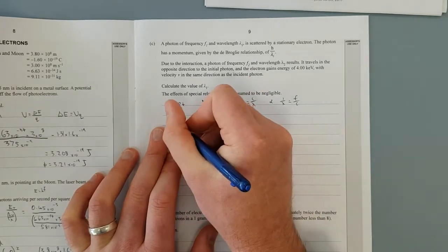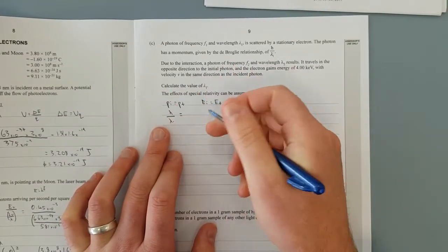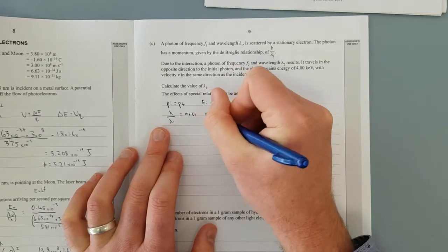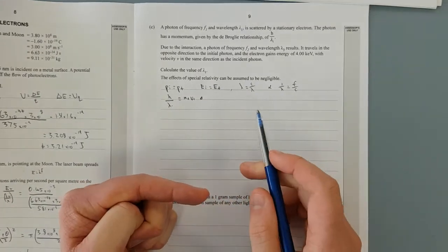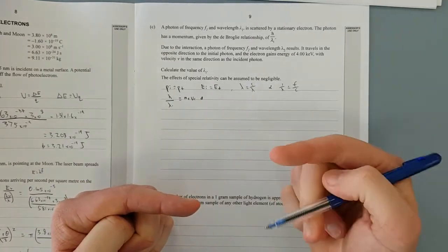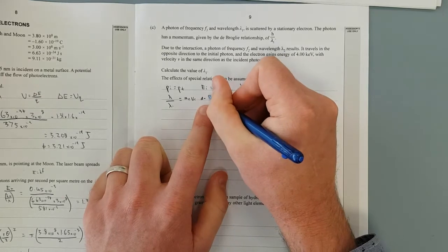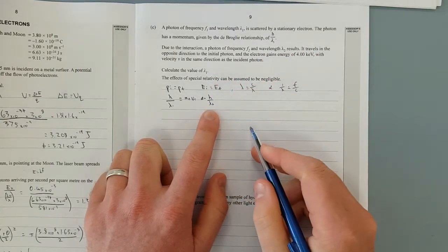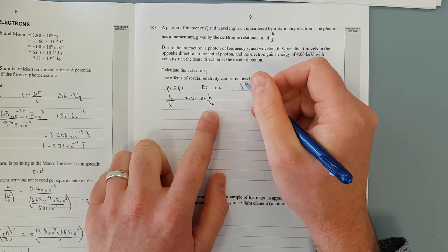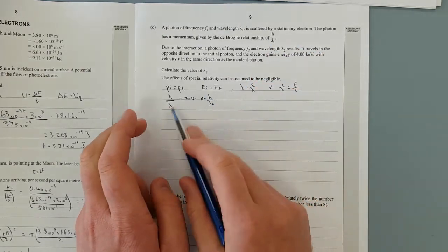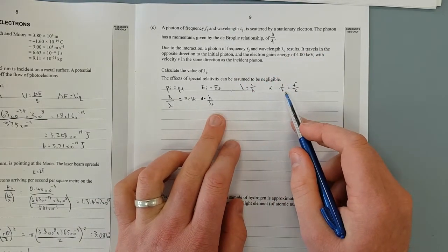Initial momentum. The only thing that had momentum to begin with was that little photon. So here's the only momentum h over lambda 1, and now the final momentum, the electron has momentum, mass times velocity, plus, oh no, hold on, wait. So this was going to the left, this is going to go to the right, and the other photon the other way. So we're going to minus that momentum, because the momentum was going the other way, so it's going to be h over lambda 2, because this was the second photon.